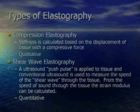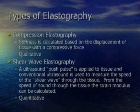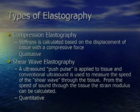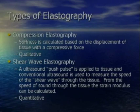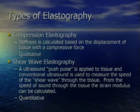The second technique is shear wave elastography. An ultrasound push pulse is applied to tissue and conventional ultrasound is used to measure the speed of the shear wave that propagates through the tissue. From this speed of sound, the strain modulus can be calculated. Since we know the amount of force applied, we can obtain a quantitative measurement of how hard or soft a tissue is.